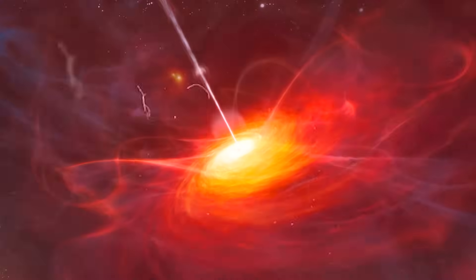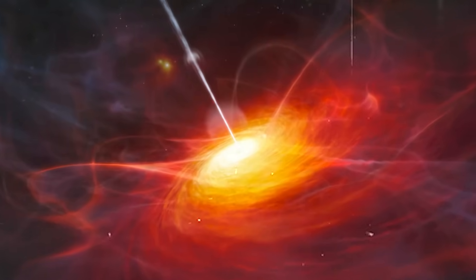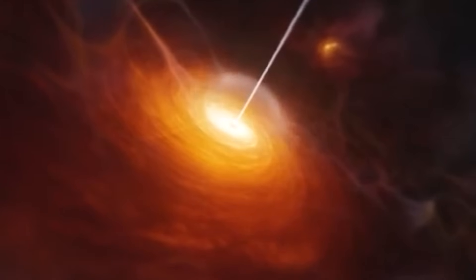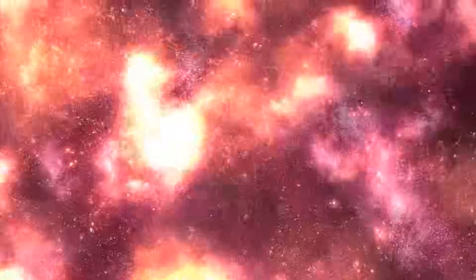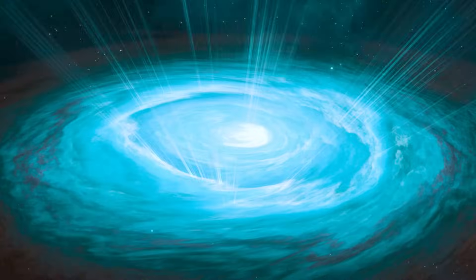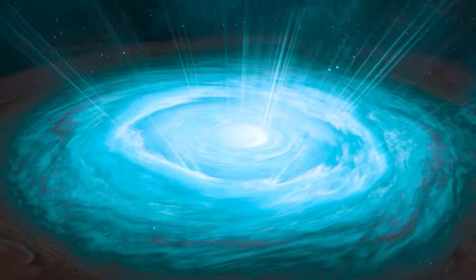The red quasar, named SDSS J165202.64 plus 172852.3, is more than 11.5 billion light-years away from us. The light from this cosmic giant began its journey at a time when the universe was just 2 billion years old.